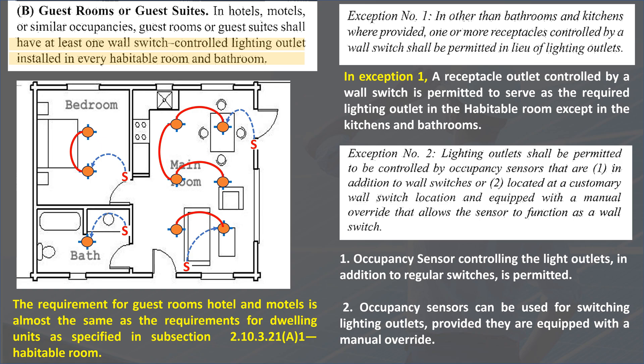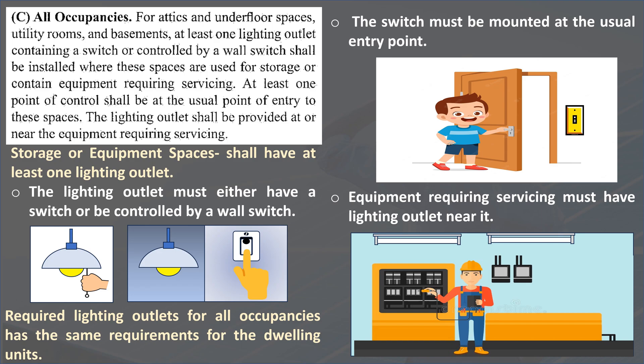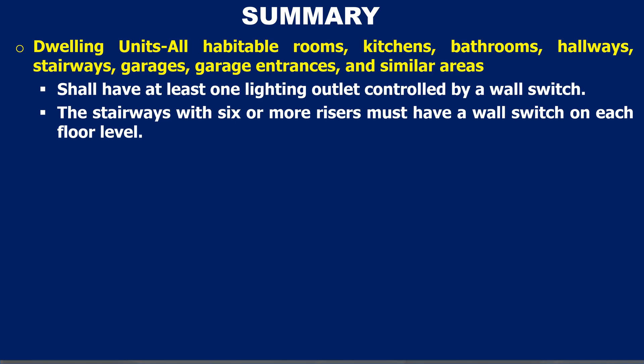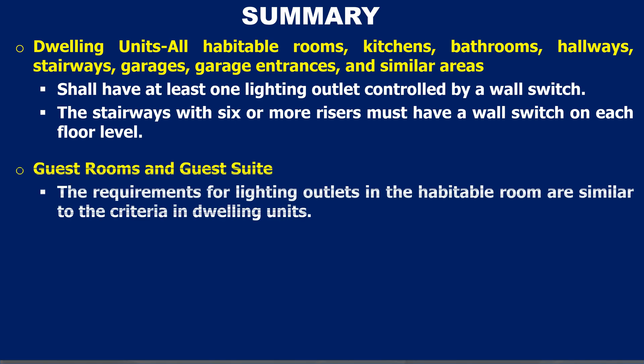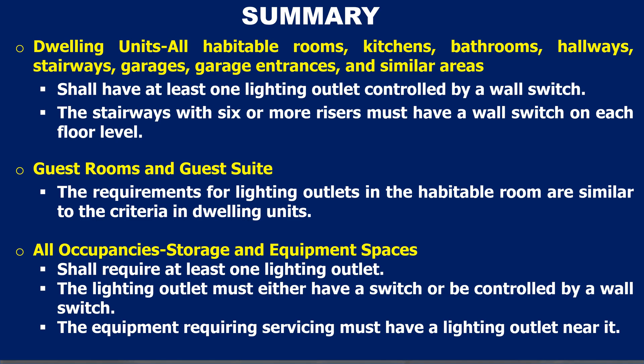Required lighting outlets for all occupancies is similar to subsection 2.10.3.21(a)(3). To summarize: all habitable rooms, kitchens, bathrooms, hallways, stairways, garages, garage entrances, and similar areas in a dwelling unit shall have at least one lighting outlet controlled by a wall switch. Stairways with six or more risers must have a wall switch on each floor level. Storage and equipment spaces for all occupancies shall require at least one lighting outlet, either with a built-in switch or controlled by a wall switch, and equipment requiring servicing must have a lighting outlet near it.